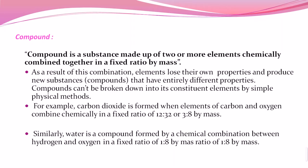A compound is a substance made up of two or more elements chemically bonded together in a fixed ratio by mass. For example, water is made of hydrogen and oxygen in a specific chemically fixed ratio. When two elements combine, their original properties are lost and they produce a new product with different properties.